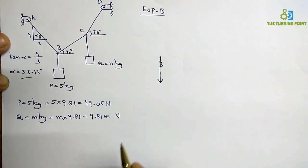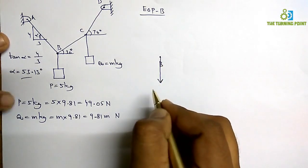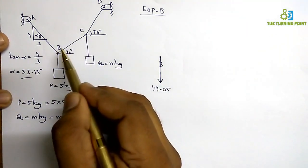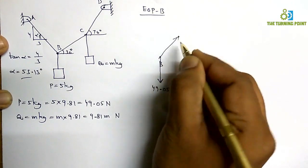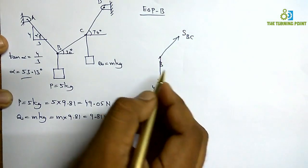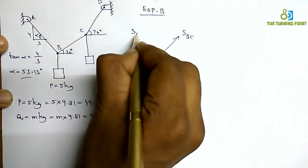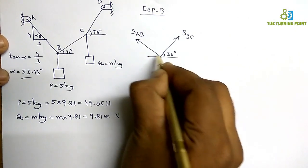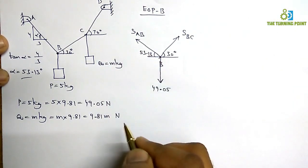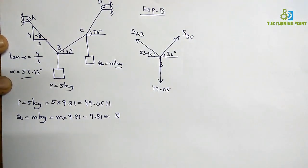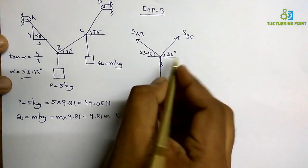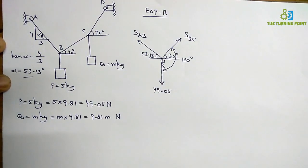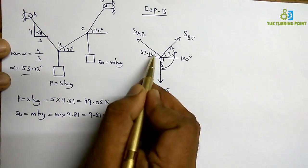For equilibrium of point B, the weight of P (49.05 N) acts vertically downwards. Along string BC there will be tensile force TBC, and along string AB there will be tensile force TAB. The angle at AB is 30 degrees and the calculated angle is 53.13 degrees. There are three forces, so I can apply Lami's theorem. First, let's find the complete angles: 30 + 90 = 120 degrees.